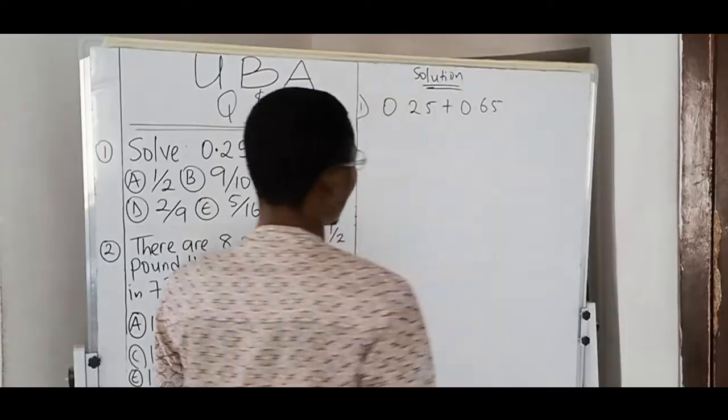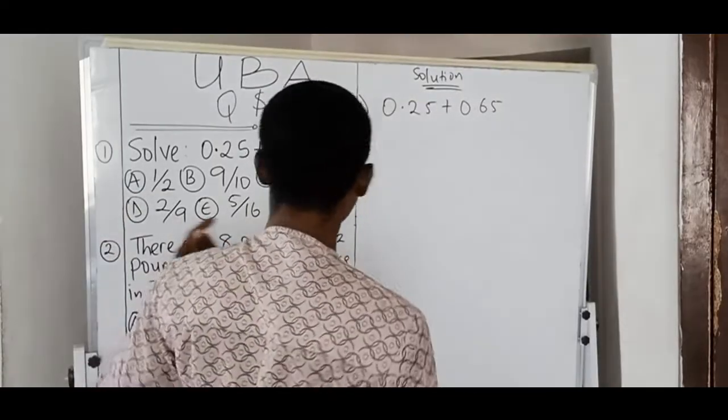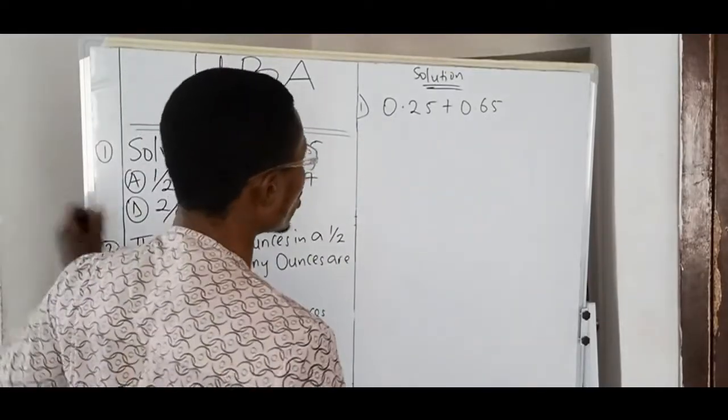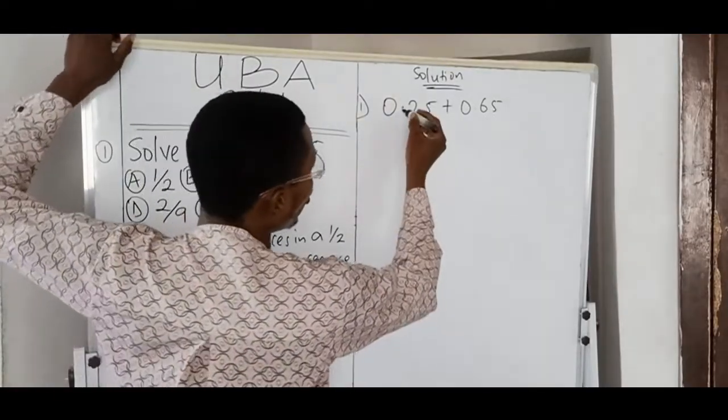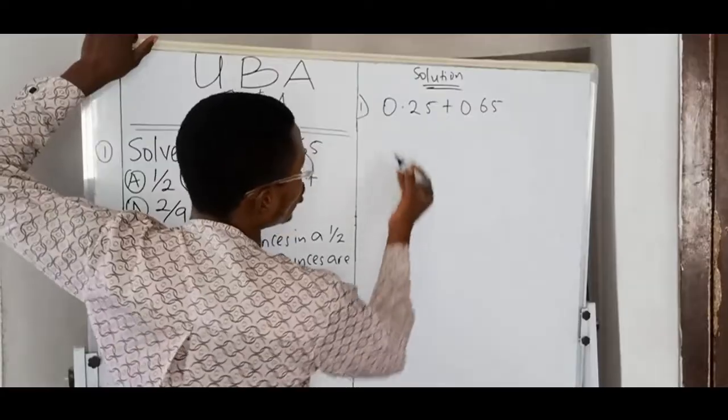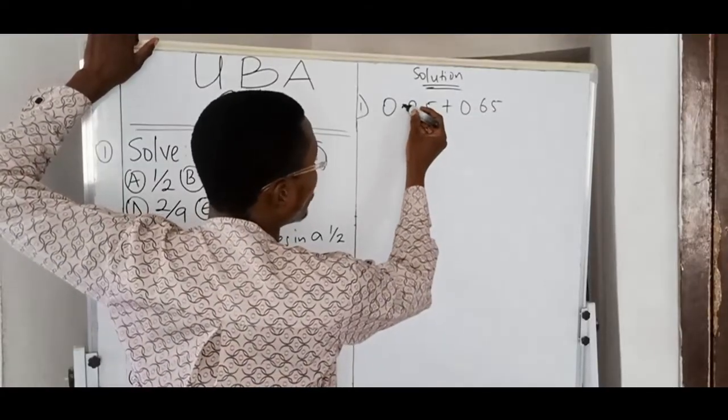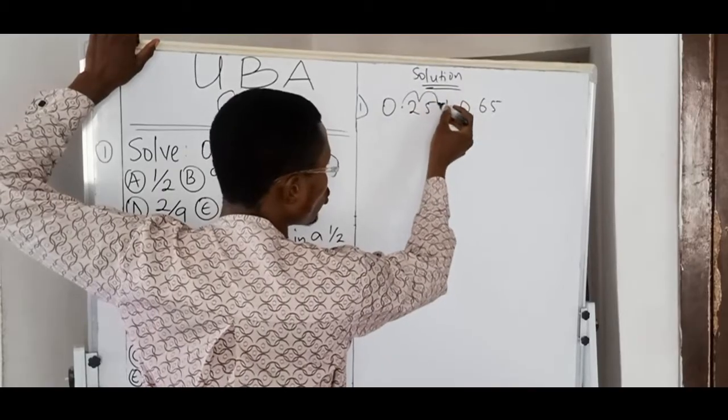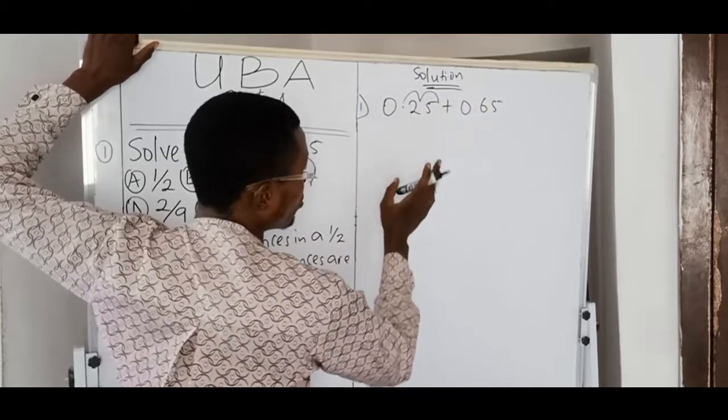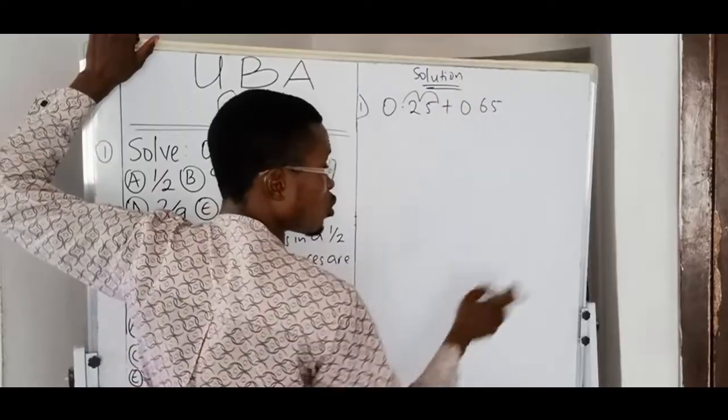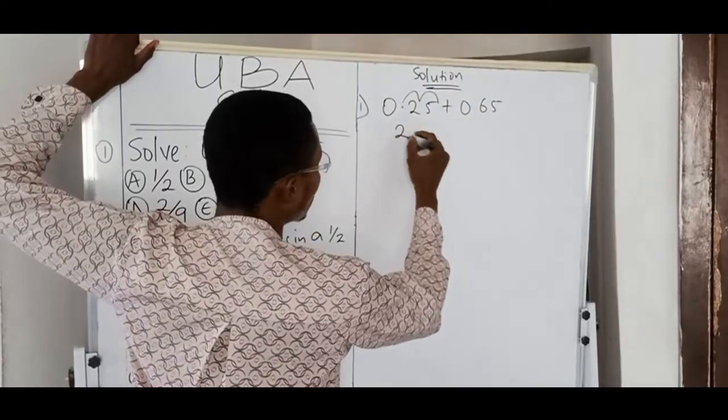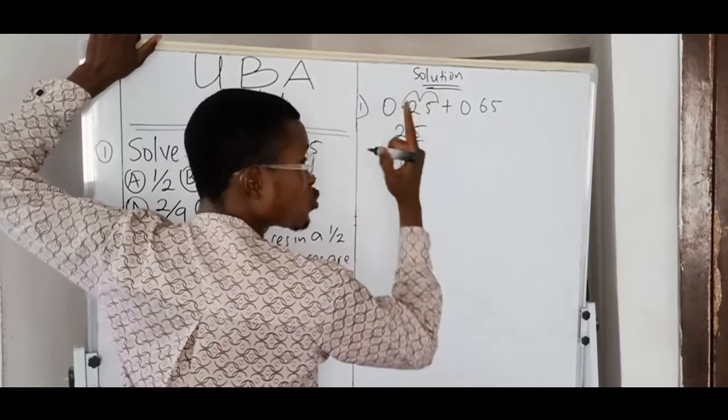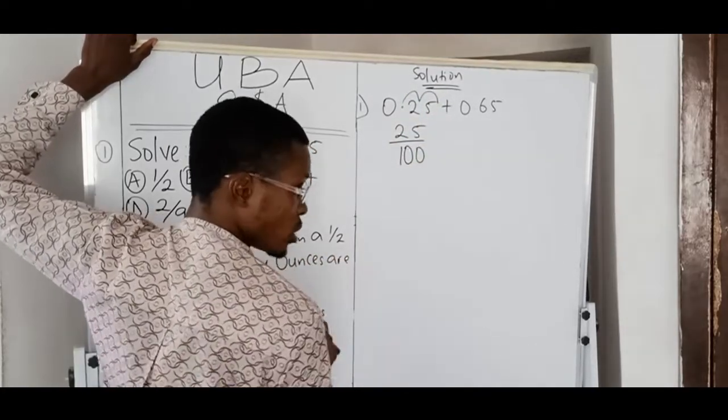Now, for number one. We are given decimal numbers, but the options are in fractions. So, let us convert this to fraction. To convert to fraction, first of all, do away with decimal points. To do away with decimal points, you move it backward. You move it forward. One. Two. You move twice to clear the decimal point. Now, you become 25.0, or it's 25. So, this is 25 over one. Now, how many times did we move? Twice. So, you add two zeros to one to make it 100.